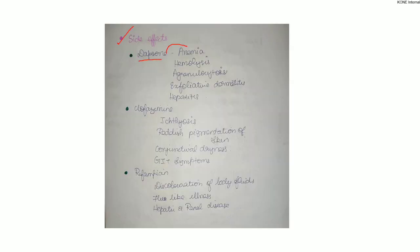Regarding drug side effects: Dapsone commonly causes anemia in patients, and folic acid supplementation tablets may be given. It can also cause exfoliative dermatitis and is a hepatotoxic drug. Clofazimine causes scaly skin, oxidative dryness, GIT symptoms, and pigmentation of the skin. Rifampicin most commonly causes orange coloration of urine and discoloration of all body fluids, and is both hepatotoxic and renal toxic.